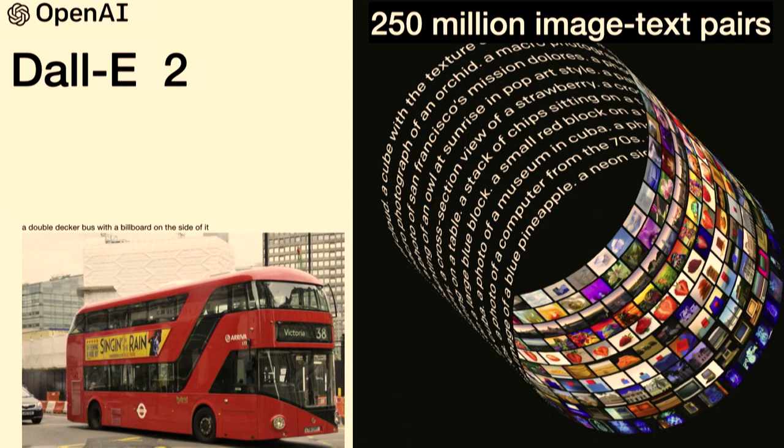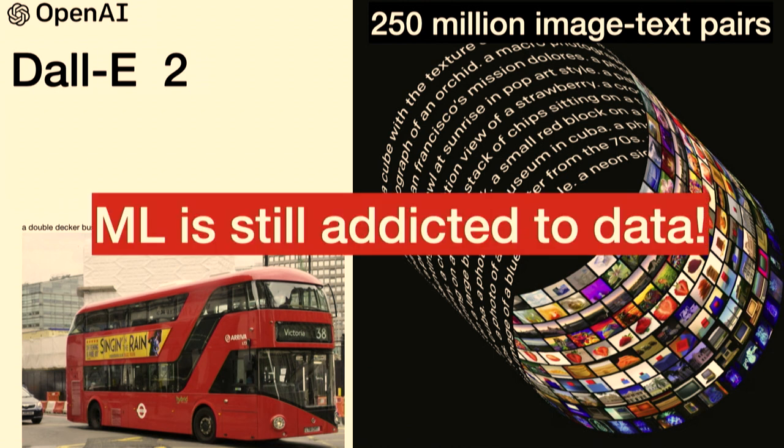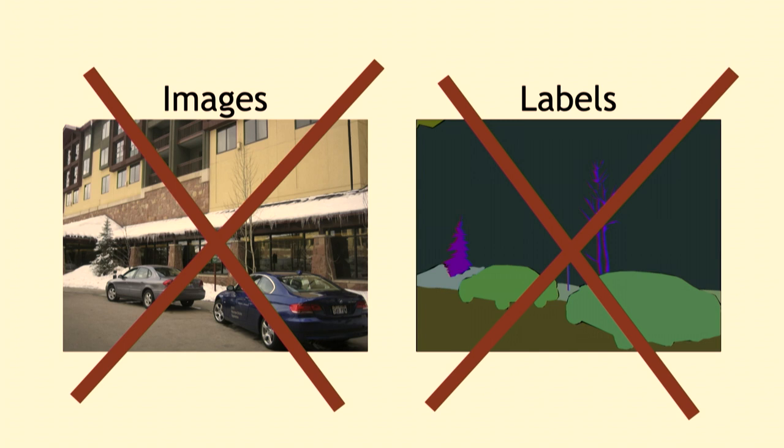But despite all the promise about getting rid of data, these machine learning systems are still addicted to data. Generative AI still uses millions and millions of images with captions. What we wanted to do was to get rid of not just the labels but also the images — to train a visual representation with no data whatsoever.